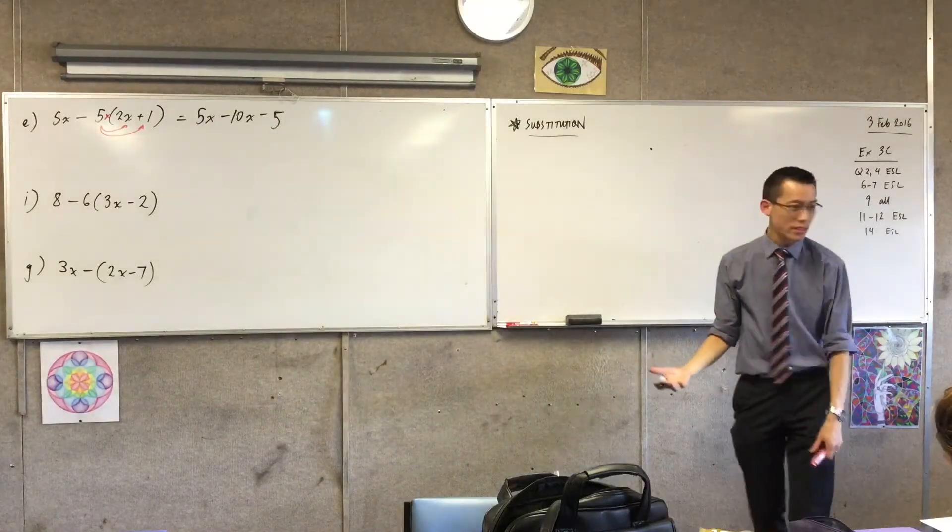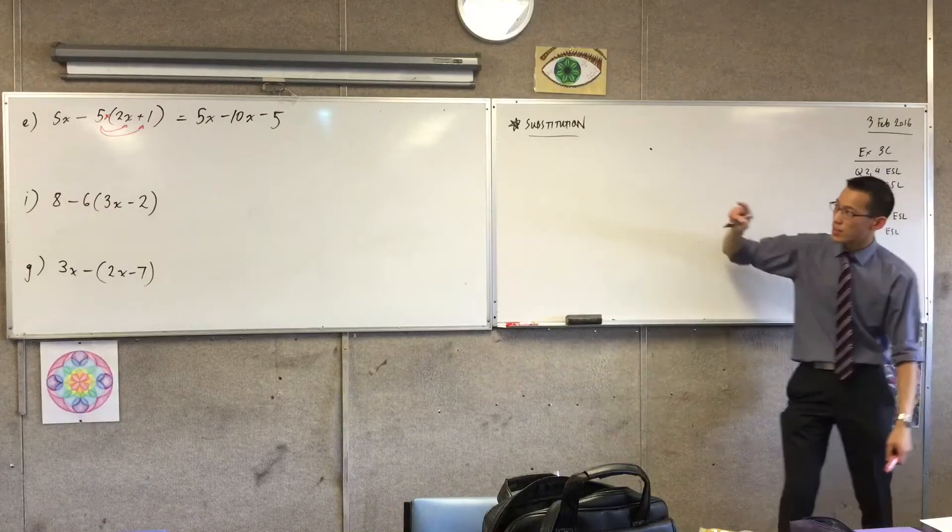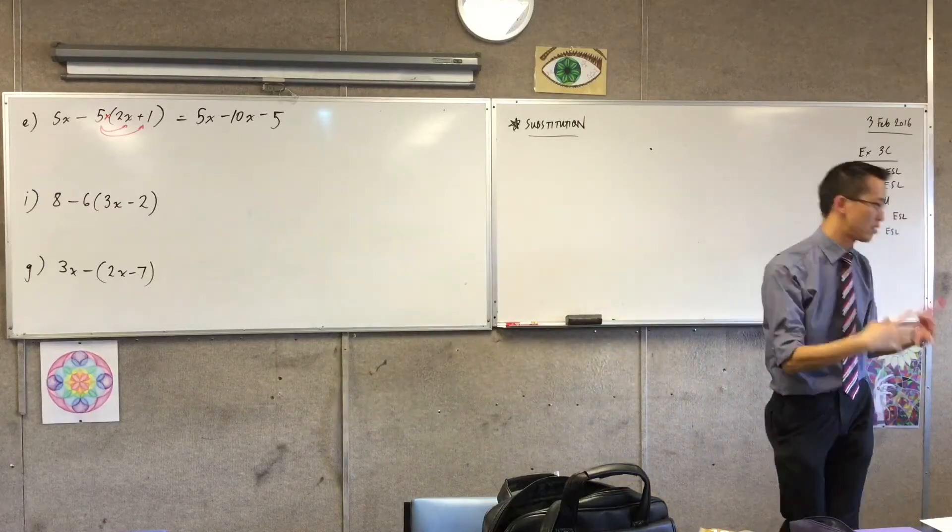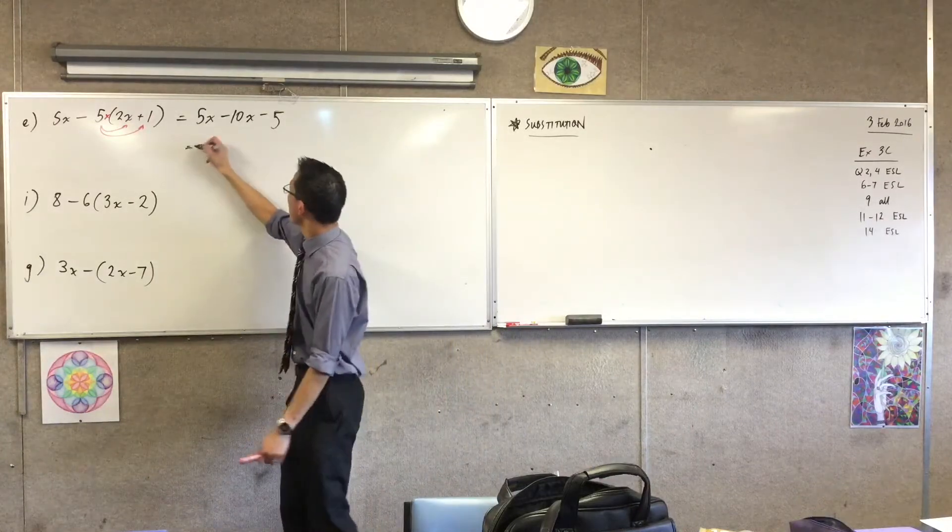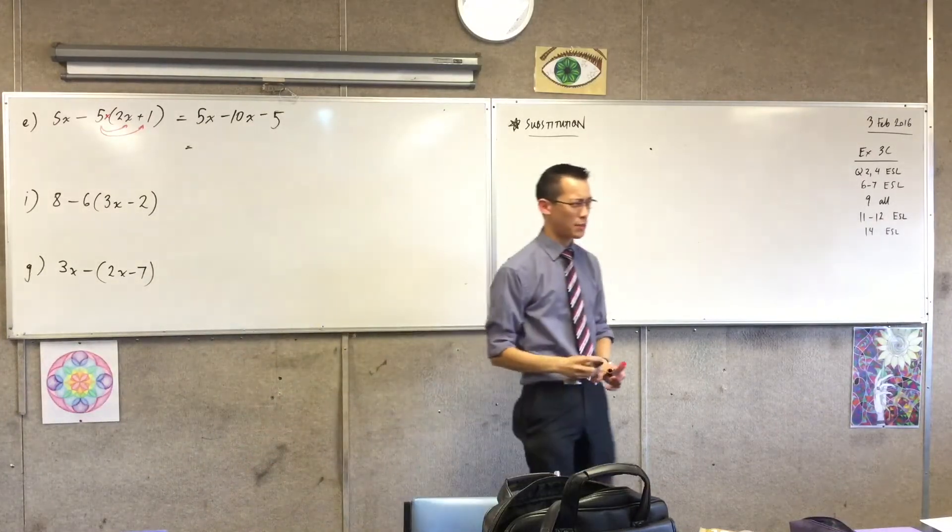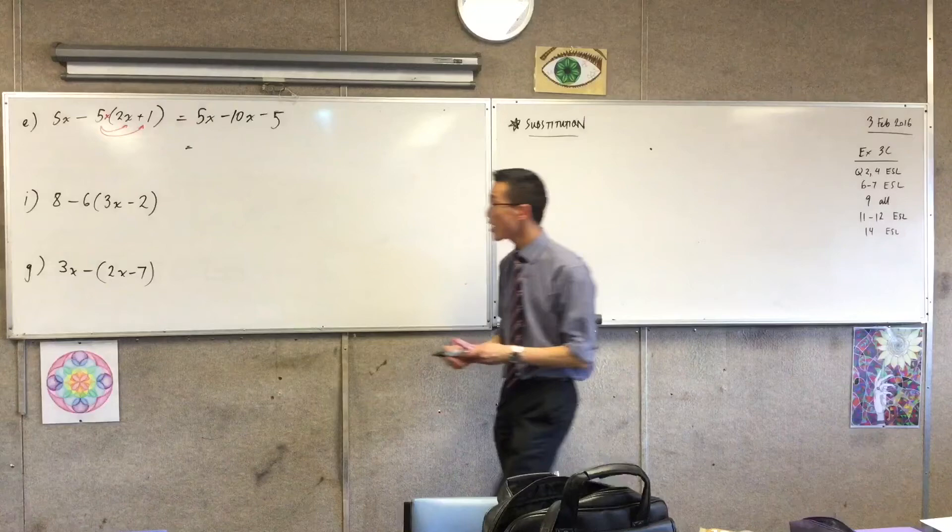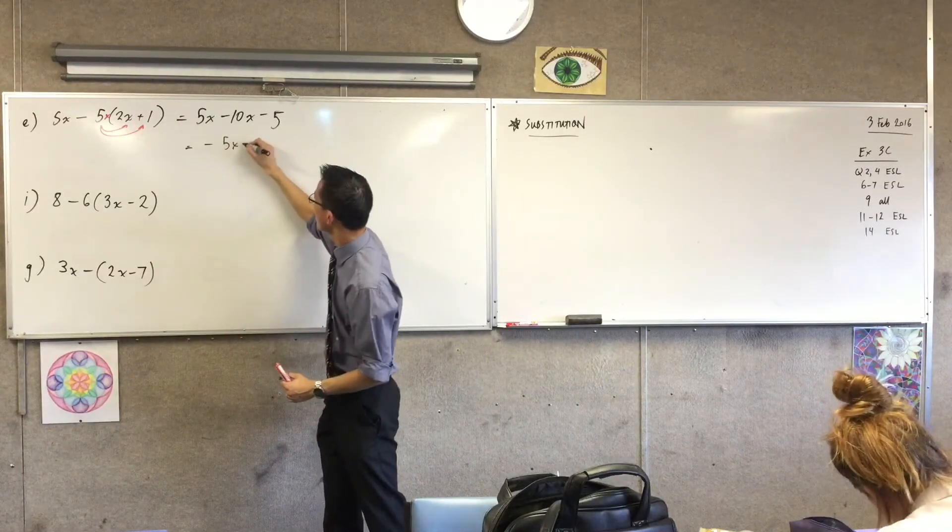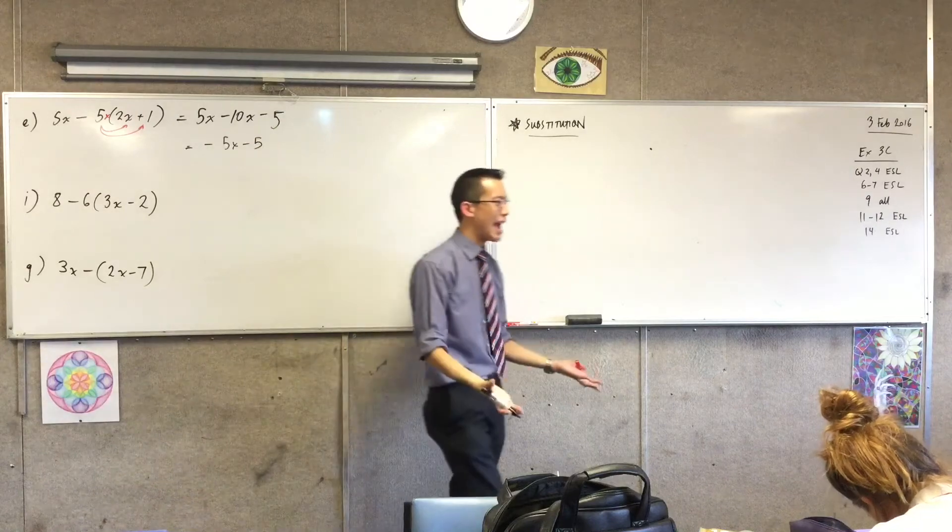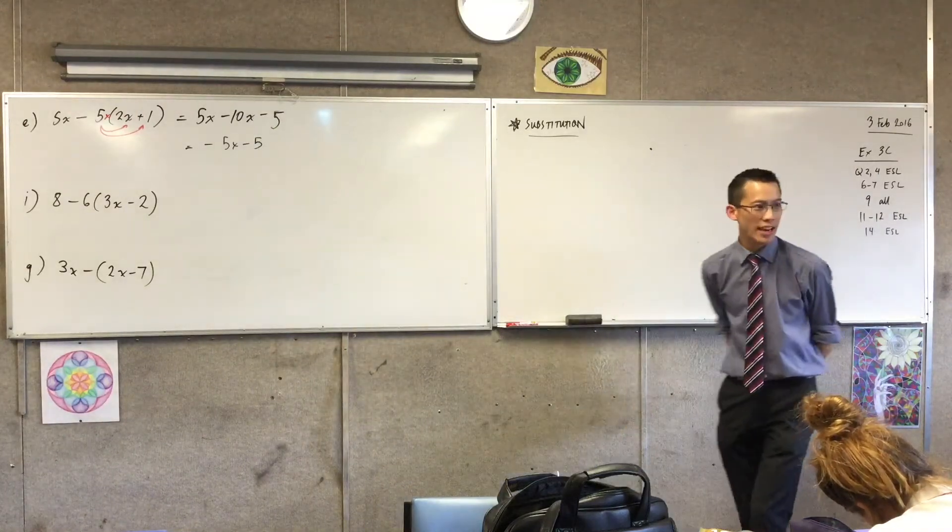Now, remember I said there's a point to this. The reason why is because the 5x and the minus 10x are like terms, so I can collect them. And what I'm going to get will be simpler. 5x take away 10x, what do you get left with? Minus 5x, right? Just because the order matters in subtraction. So minus 5x take away 5, and it's done. That's as simple as it's going to get.